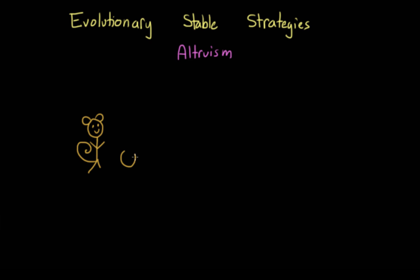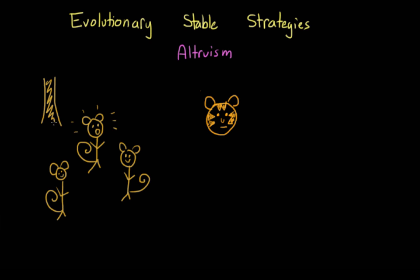So imagine that we have two groups of monkeys. In one group, the monkeys act selfishly. When one sees a predator approaching, he takes the time to hide and does not warn the others, which makes it more likely that he'll escape and that the predator will eat one of the other monkeys instead.